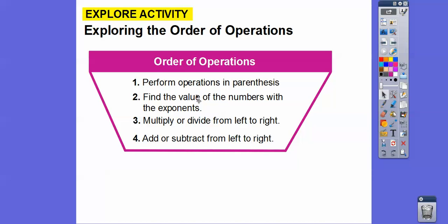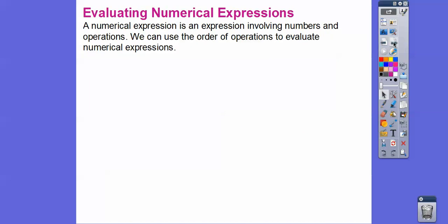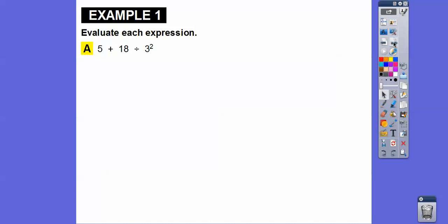So we do parentheses first, exponents second, multiplying or dividing from left to right next, and then adding or subtracting is always the last step from left to right. Numerical expressions are expressions that involve numbers and operations, and we use the order of operations to evaluate them. Let's jump right in.